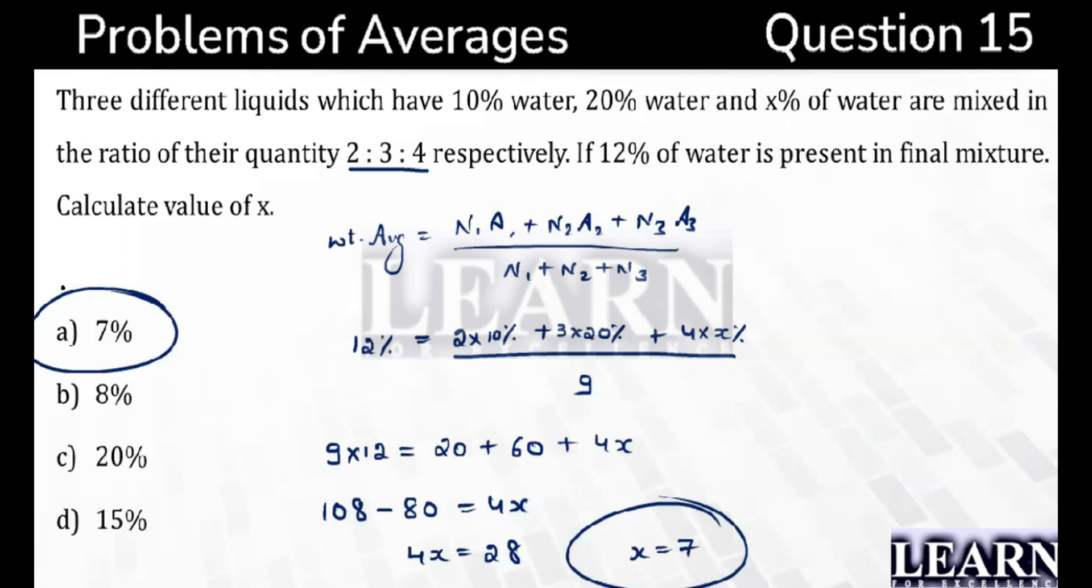When you have more than two quantity, three quantity, four quantity, it's better that you directly jump with the weighted average and you can directly solve it. Hardly one minute and you can tackle it.